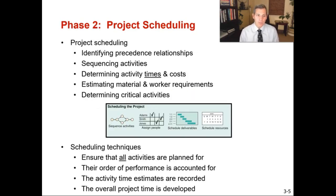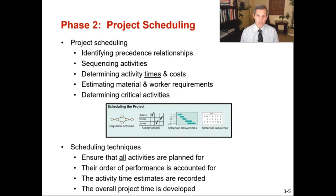Phase two in project management is project scheduling. This is where you identify precedence relationships, sequence your activities, determine activity times and costs, estimate material and worker requirements, and determine the critical activities. This is where you spend a significant portion of your effort, because if you get these wrong, your project will be wrong as well — you'll have wrong costs, wrong times, or you'll forget critical steps.